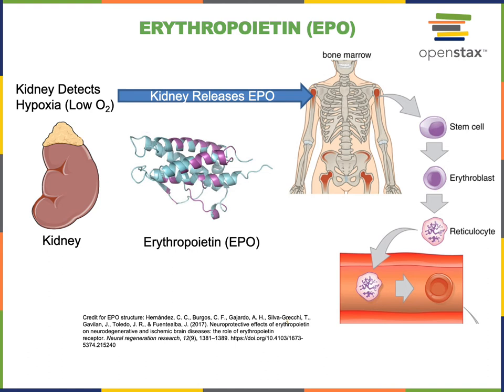This functions as a homeostatic control mechanism to maintain blood oxygen concentration. However, erythropoietin is abused as a performance-enhancing drug by some athletes in order to increase oxygen delivery to tissues. This is referred to as blood doping, and the use of erythropoietin for blood doping has been banned in most organized sports. However, erythropoietin is also used therapeutically as a medication to treat certain forms of anemia.